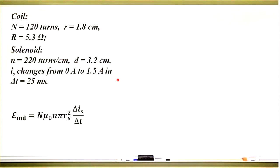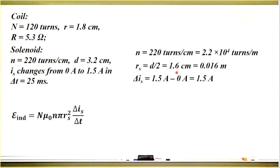To calculate current, first we will convert all quantities we need to standard units. We start with N, which is 220 turns per cm, and it equals 2.2 times 10 to the 4 turns per m. Radius of the solenoid is one half of the diameter, or 0.016 m. Change of the current delta Is equals 1.5 amps. The permeability of free space is given by this number. So we plug in all this stuff to this equation and we will get the answer.